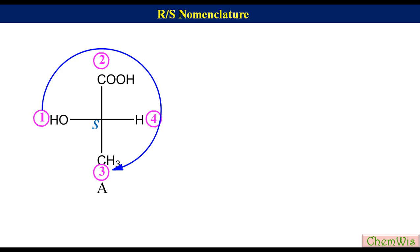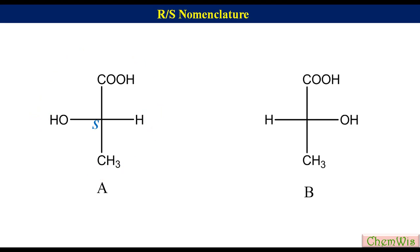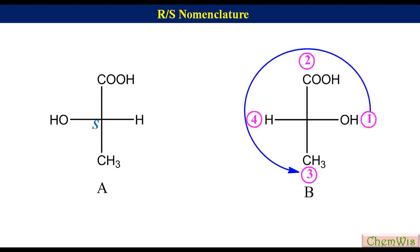Similarly, if we have the Fisher projection of lactic acid shown by formula B, to find out the absolute configuration label the groups based on their priorities as 1, 2, 3, and 4. Draw an arrow from 1 to 3 via 2. Here the fourth priority group is on the horizontal line and the direction of arrow is counterclockwise, so the configuration will be R.